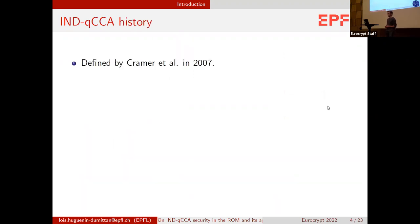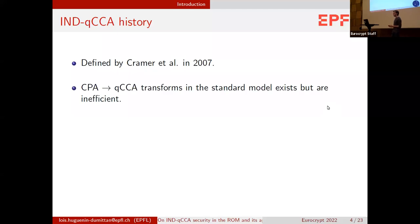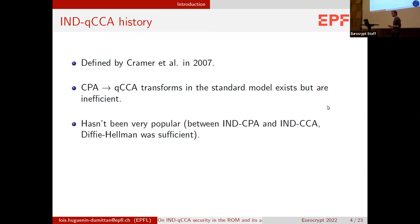This notion was first defined by Kramer et al. in 2007. In that work, they showed it's possible to build a CPA to QCCA transform in the standard model, but this transform is quite inefficient. Apart from this work and a few others, this notion hasn't been very popular, or at least not in practice.